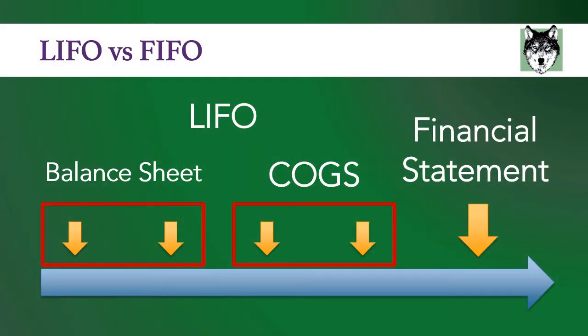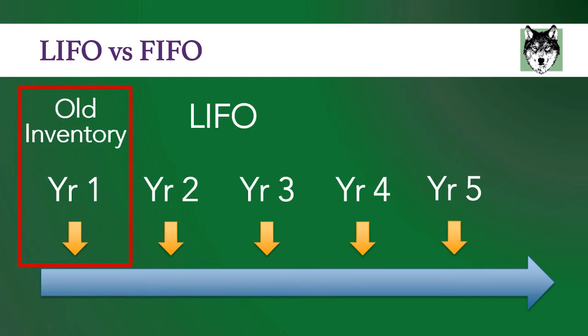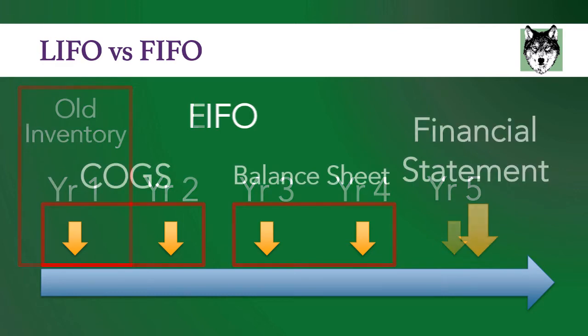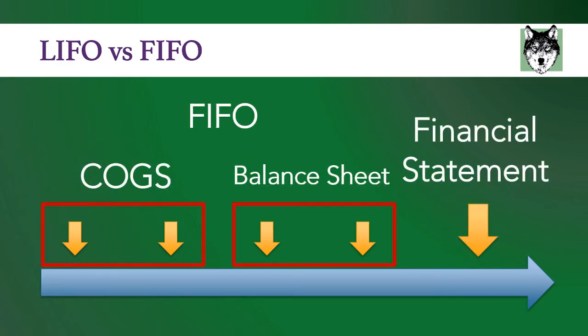The biggest criticism of LIFO is that over long periods of time, LIFO skews the value of your inventory on your balance sheet. Imagine you're always selling your most recent purchases — your older purchases can sit on your balance sheet for years. So if you're in business for 10 years, your inventory number may not reflect what you actually have in stock. Whereas under FIFO, your balance sheet number is more accurate because your inventory includes your most recent purchases.